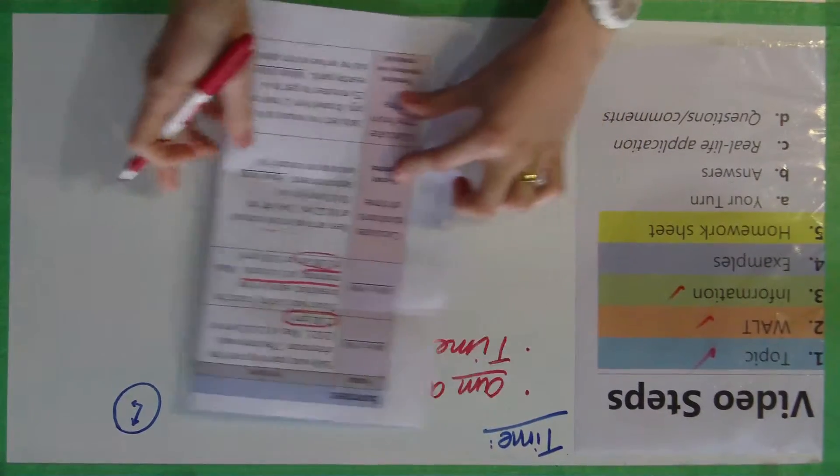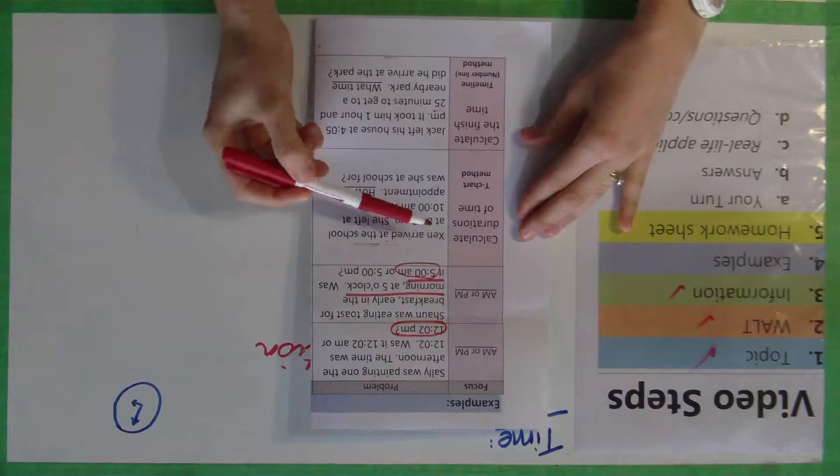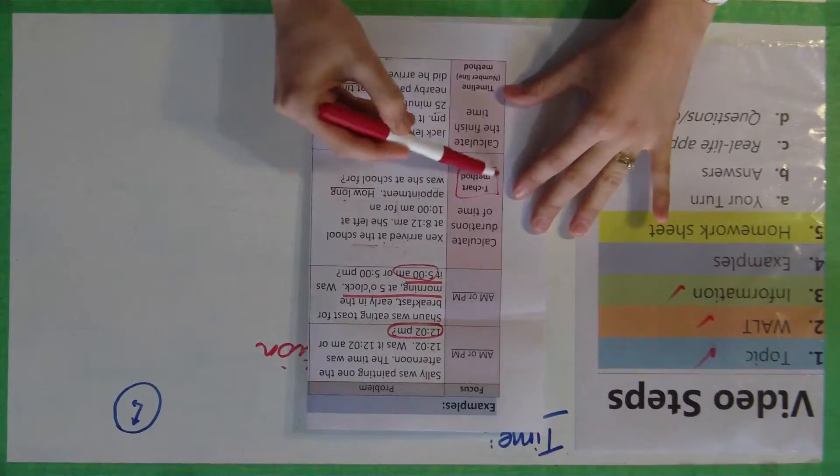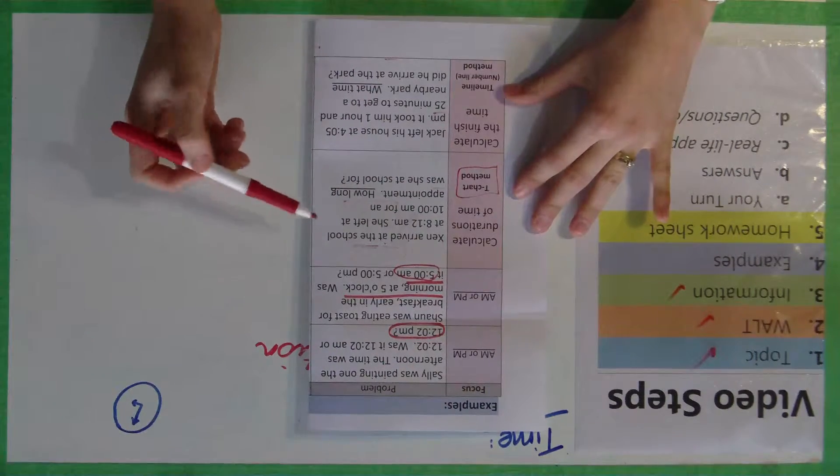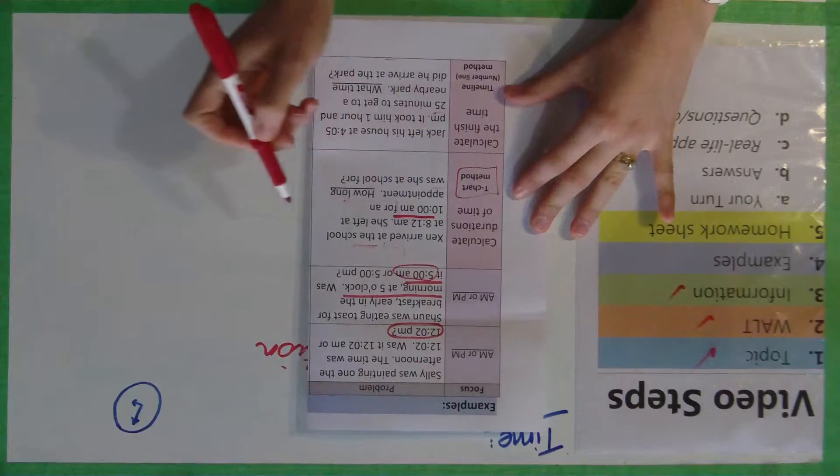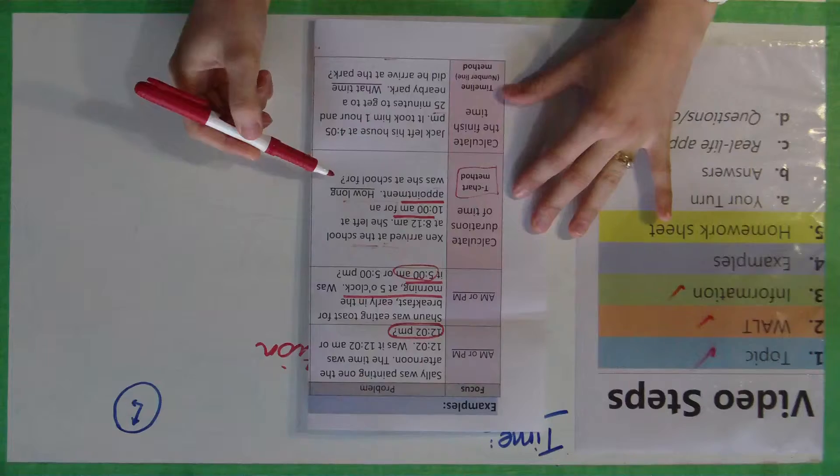And then the next one we're focusing on is time duration. This is calculate durations of time. That means how much time has passed using the t-chart method. So for this one here, Zen arrived at the school at 8:12 a.m. She left at 10 a.m. for an appointment. How long was she at school for?